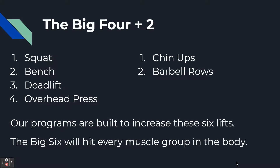Everybody that does programming talks about the big four: squat, bench, deadlift, and overhead press — these will hit almost every muscle in the body. I think it's important to also add a vertical pull and a horizontal pull, so we're going to add chin-ups and barbell rows. These are the big six. When we first start, we'll focus on squat, bench, deadlift, and chin-ups, and once we get used to those, we'll add the overhead press and barbell rows. Doing these six will hit literally every muscle group in the body efficiently, letting us do heavier weight and progress everything at the same time.